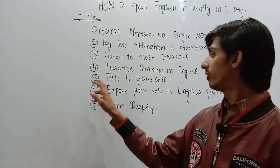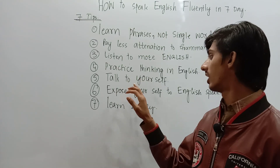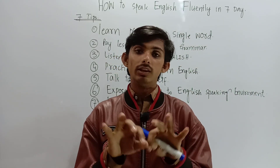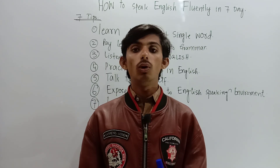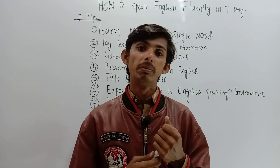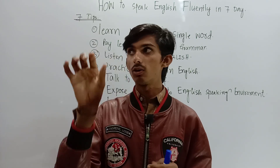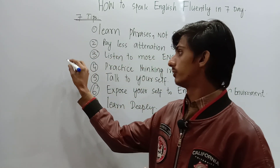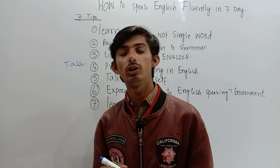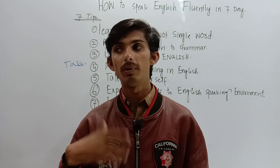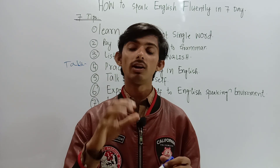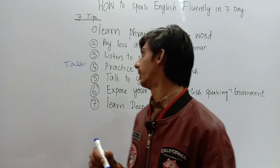Number 5 is: talk to yourself. When you watch English movies, talk with yourself. Make a topic — for example, a train journey — or tell about yourself. Take a topic and start speaking on that topic.